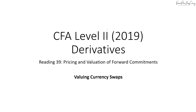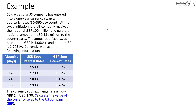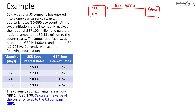In this video we'll be looking at the valuation of currency swaps. 60 days ago, a US company entered into a one-year currency swap with a counterparty. The US company will receive 100 million pounds in notional at initiation and then pay 131 million US dollars. This lasts for 360 days. The annualized fixed swap rate on the pound is 1.0666% and for the dollar is 2.7251%. Currently, after 60 days, the currency spot exchange rate is 1 pound to 1.38 US dollars. Calculate the value of the currency swap to the US company in pounds.